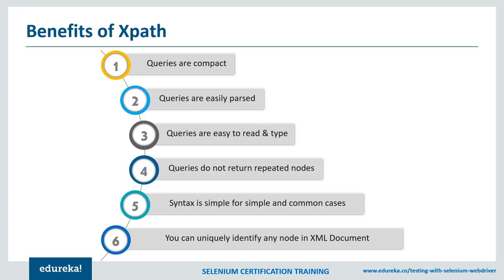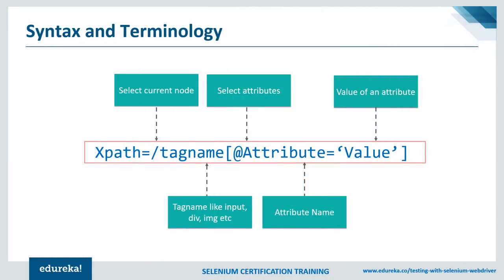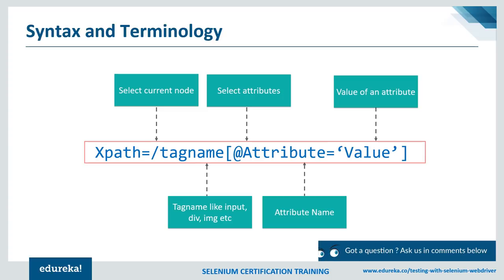Let's take a real-world example and understand XPath. Before that, let's see the syntax and terminologies of XPath. A forward slash indicates selecting the current node. The tag name will be your tag name, like input, div, img, etc. The ampersand (@) indicates selecting attributes, followed by the attribute name and the value of that attribute. This is the very simple syntax of an XPath query.